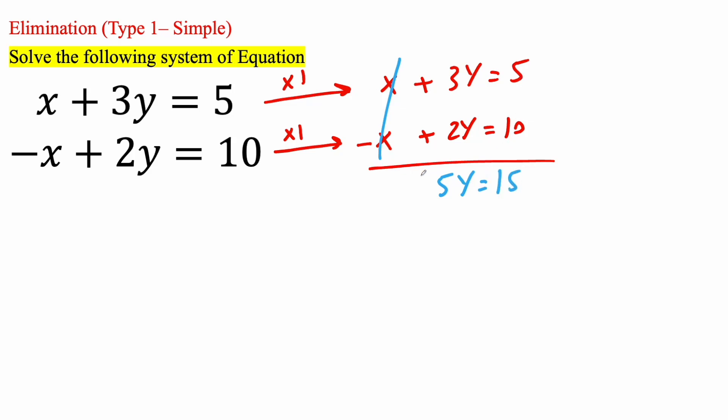And if we want to solve for y, it says 5 times y. So we need to do the opposite of multiplication. So we need to divide, divide by 5, divide by 5, and so y is equal to 3. So we have one component.